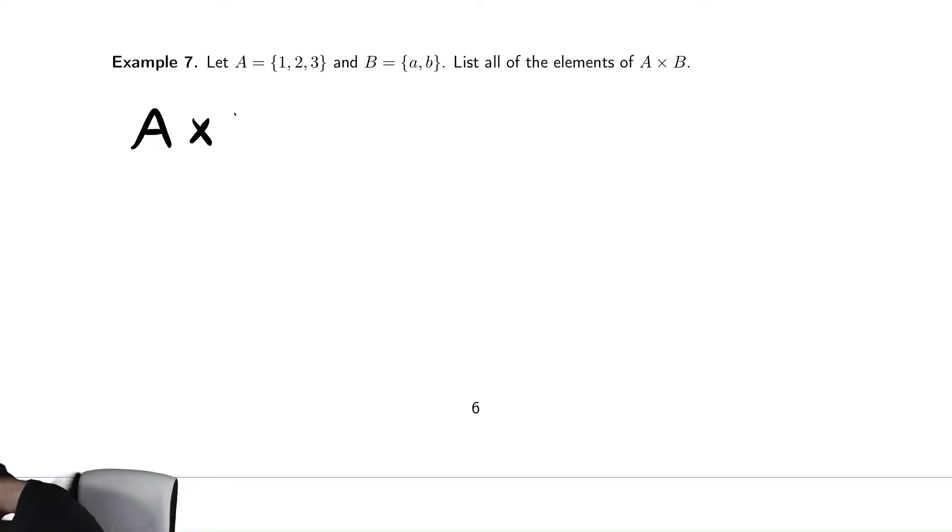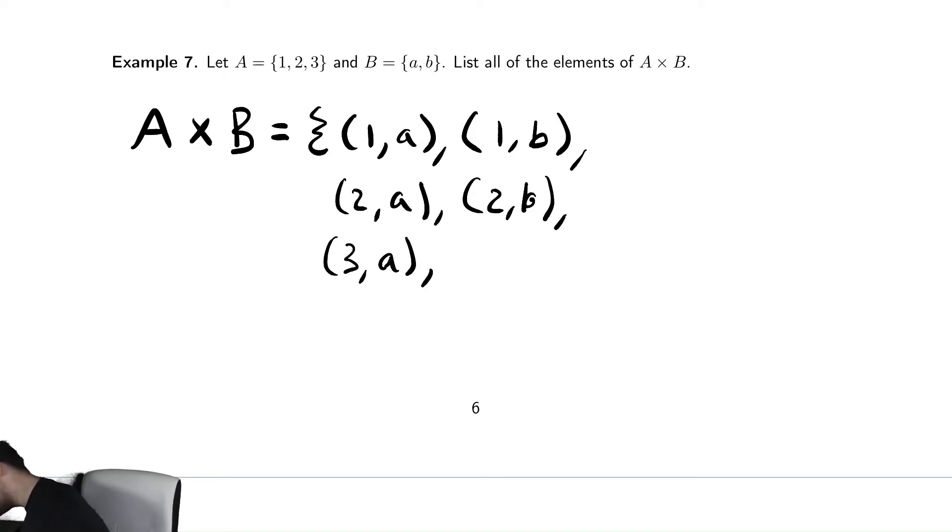A times B is the set. Well, I need to pair one with every element from B. I wrote this in a weird way. We're good. So we have one A and one B. I need to pair two with every element from B, which is two with A and two with B. I need to pair three with every element from B, which is A and B. So that set contains six elements.